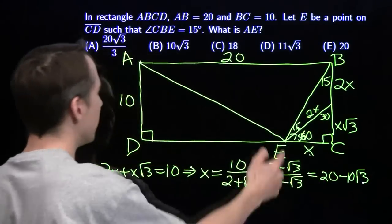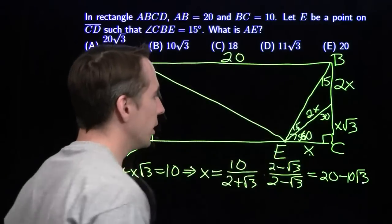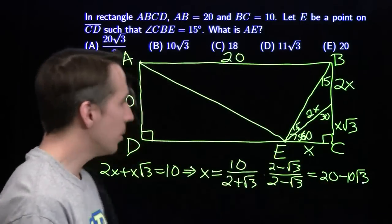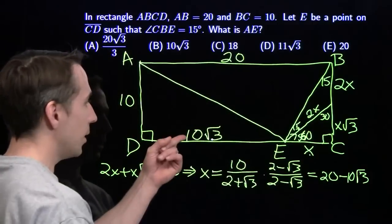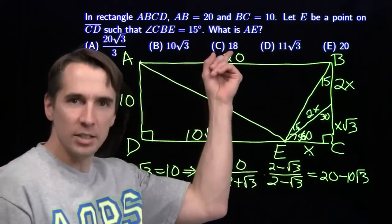Now x plus this is 20. So if x is 20 minus 10 root 3, that means this has to be 10 root 3. Because 10 root 3 plus that mess is 20.